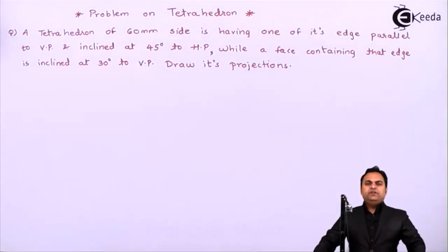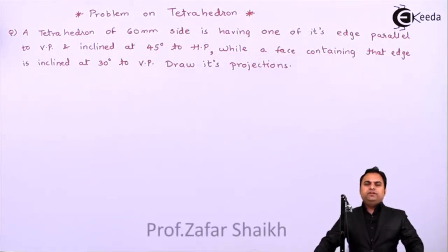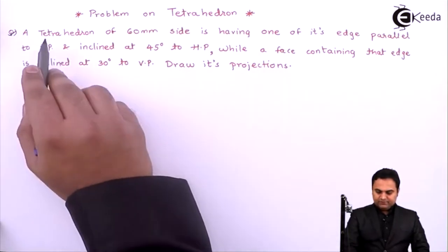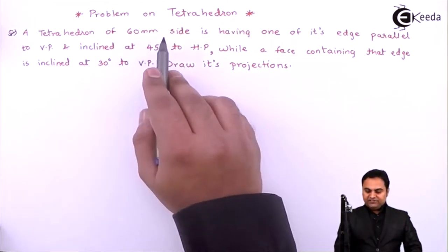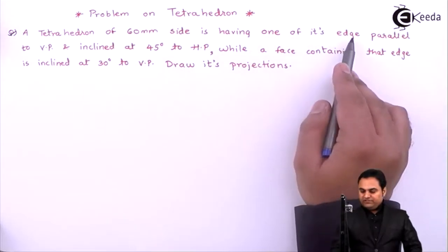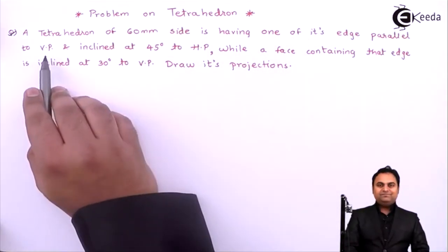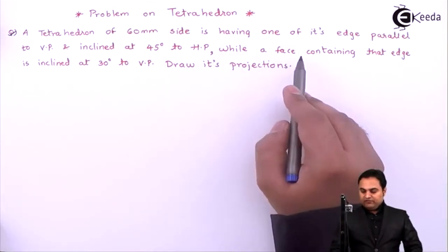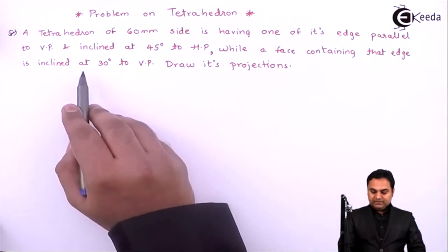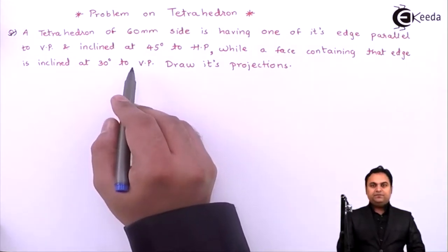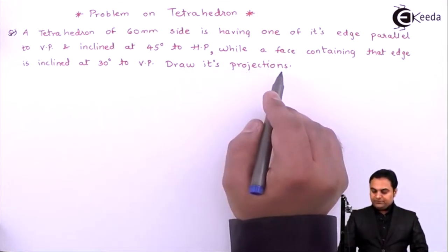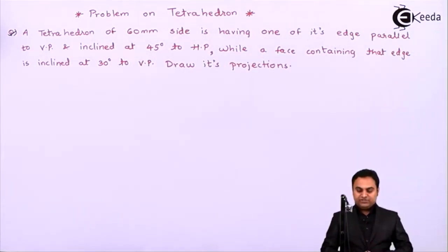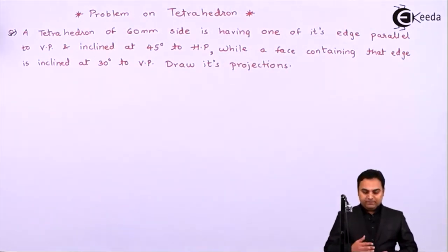Hello friends, in this video we are going to see a problem on tetrahedron. A tetrahedron of 60 mm side is having one of its edges parallel to VP and inclined at 45 degrees to HP, while a face containing that edge is inclined at 30 degrees to VP. Draw its projections.